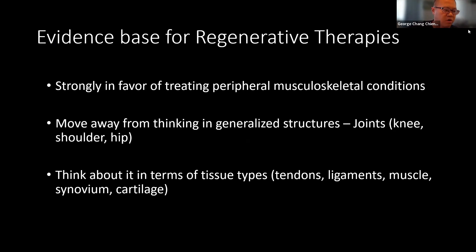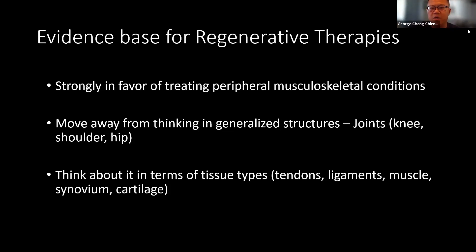This is a talk on regenerative medicine, and the evidence base for regenerative therapies — the level-one studies, the RCTs — is really in the treatment of things in the peripheral musculoskeletal system: muscles, tendons, ligaments, etc. I also want you to move away from thinking about generalized structures. Instead of asking 'how do I treat someone's knee OA?', think about the specific tissue types — the tendon issue, the supraspinatus tear, the ligament tear — and address those specifically.